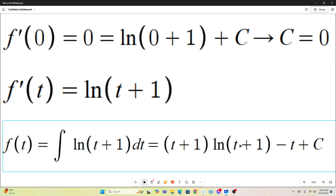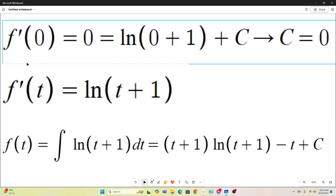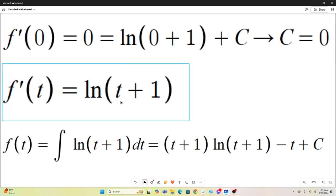Again, f of t is equal to the antiderivative of f prime of t, which is natural log t plus 1. So f of t is equal to the integral of natural log t plus 1. And now, this is, you need u substitution and integration by parts to solve this integral. I'm not going to show it. Anybody watching this channel is more than likely able to do that one fairly easily. So I won't show that.